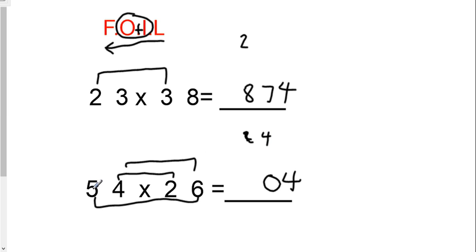Then you're going to do the first number times the first number. 5 times 2 is 10, plus the 4 is 14. You would write the 14. There is no carrying on the last step. You just write what you have, and you end up with 1,404.